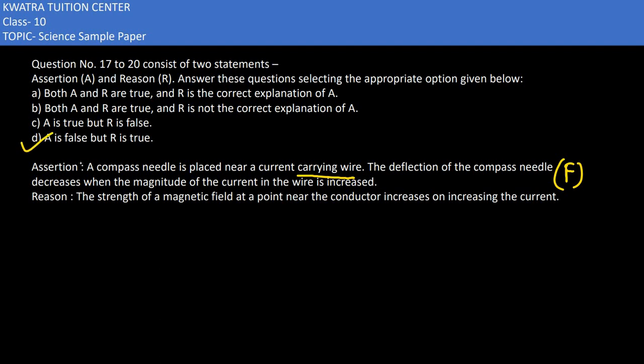Option D is our option. So try to understand: first of all, they said that the deflection will be reduced when the current will be increased. This will not happen. When the current increases, the deflection increases because they are proportional to each other. So option D is the answer for the 19th part.